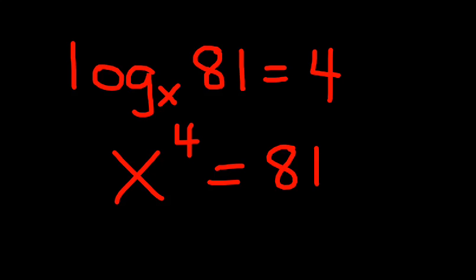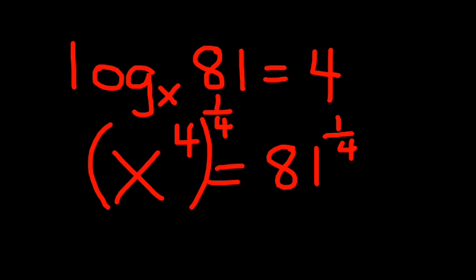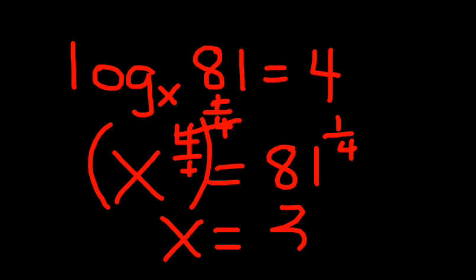Recalling the rules of exponents, to get rid of x to the fourth power we raise both sides of the equation to the reciprocal power, 1/4. So we have x to the fourth raised to the 1/4, and 81 to the 1/4. The exponents cancel leaving just x, and 81 to the 1/4 means the fourth root of 81 — what number multiplied by itself 4 times equals 81. That's x equals 3, since 3 times 3 is 9, times 3 is 27, times 3 is 81.